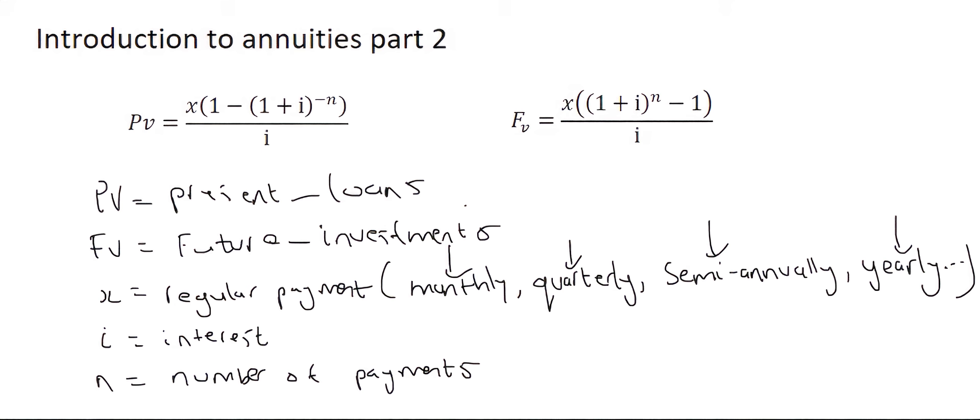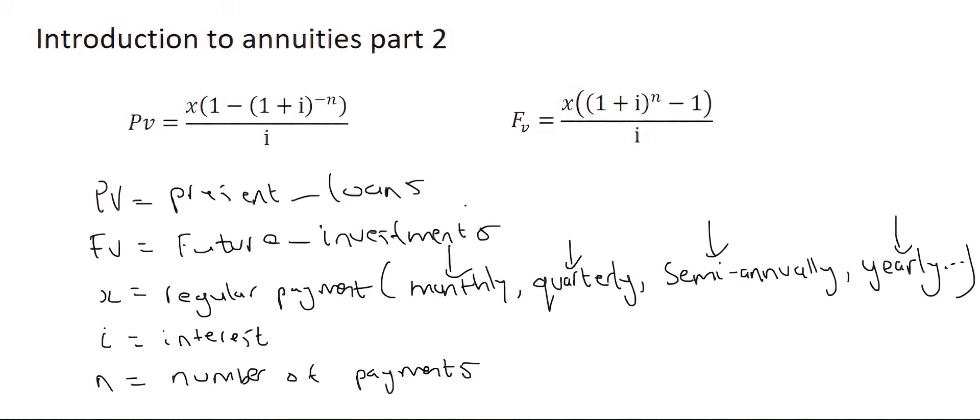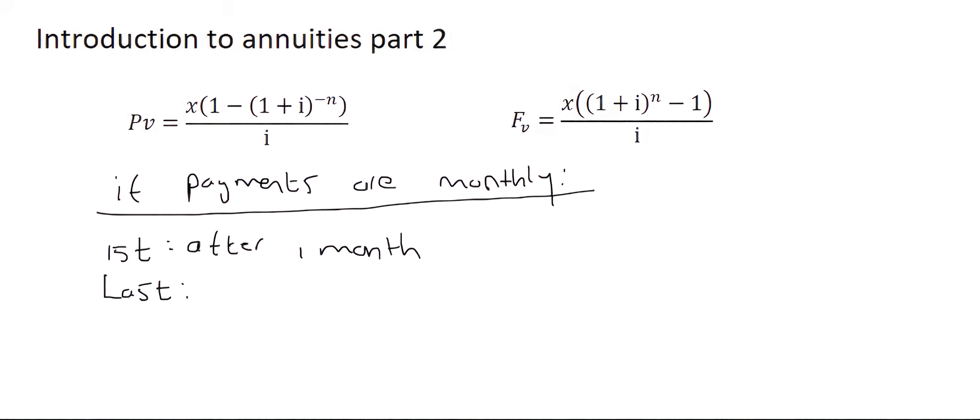Now I'm going to give you two very important pieces of information that you have to remember. These two formulas were derived in a particular way, and so we have to stick to the following two criteria. If you are making monthly payments, then you should always make your first payment after one month. And your last payment should always be made at the end. So it's a bit counterintuitive - we wouldn't usually do that in real life, but that's just how these formulas work.